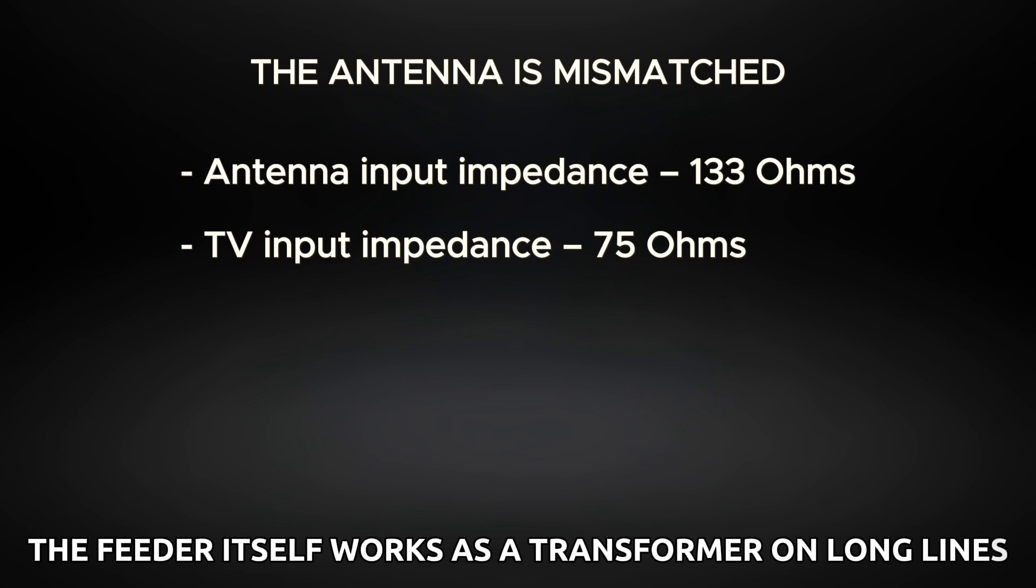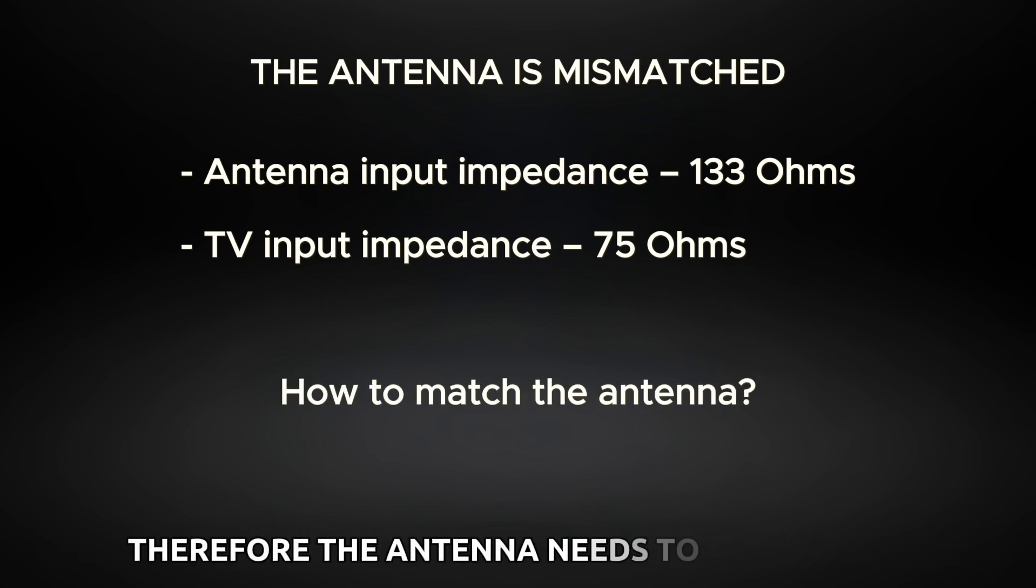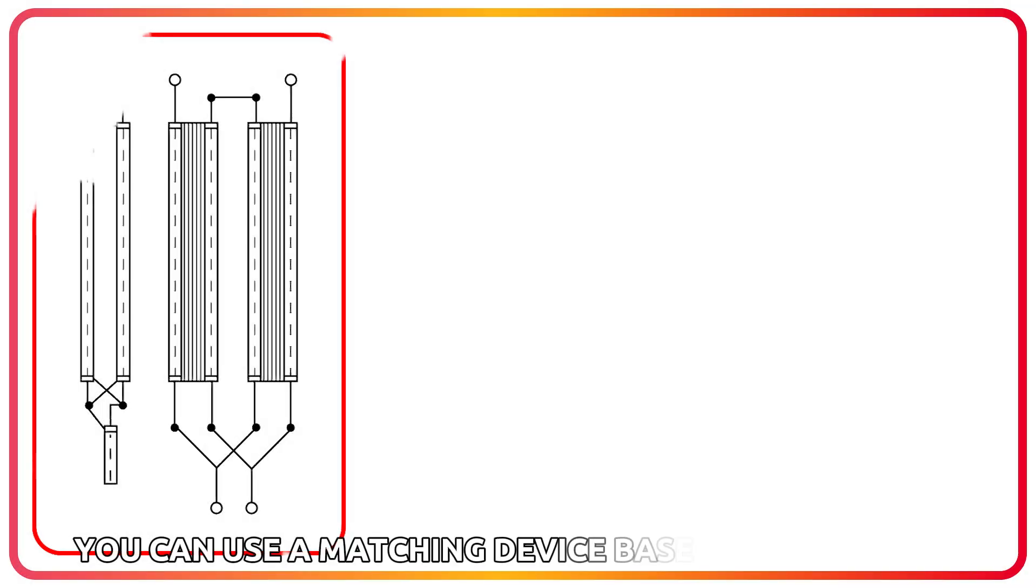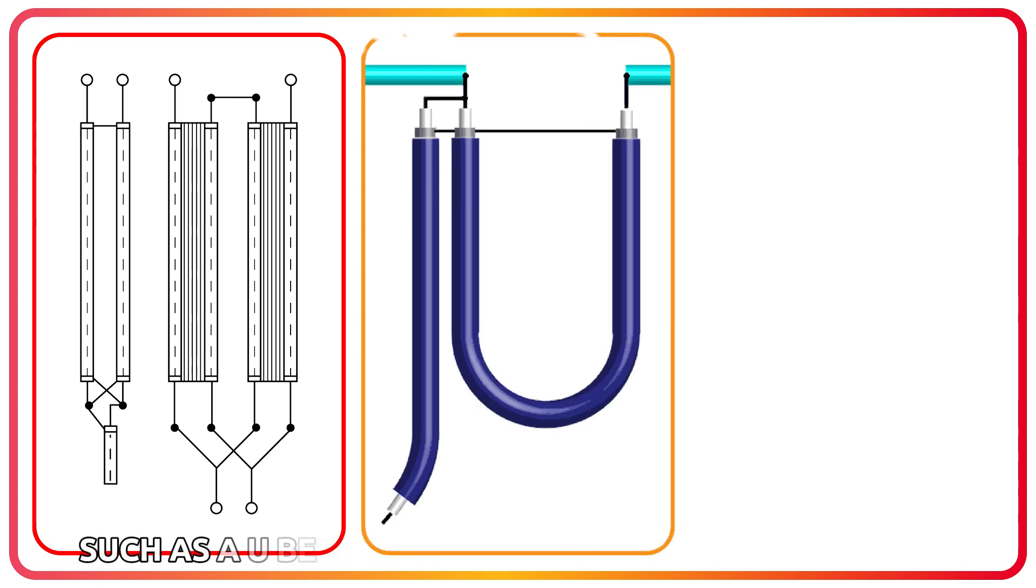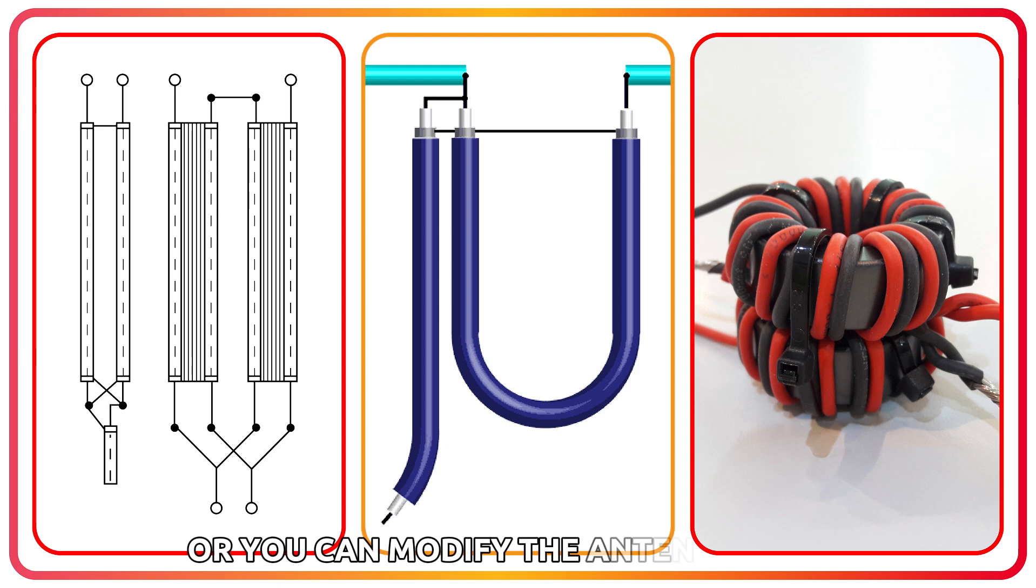Therefore, the antenna needs to be matched. There are several ways to do this. You can use a matching device based on long lines, such as a U-bend, a Farad impedance transformer, or you can modify the antenna itself, making it even more powerful. I consider the latter option preferable.